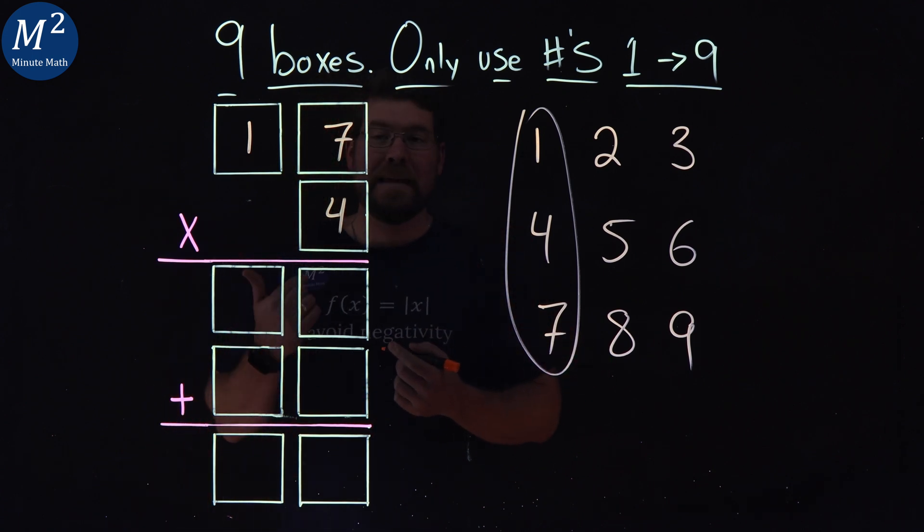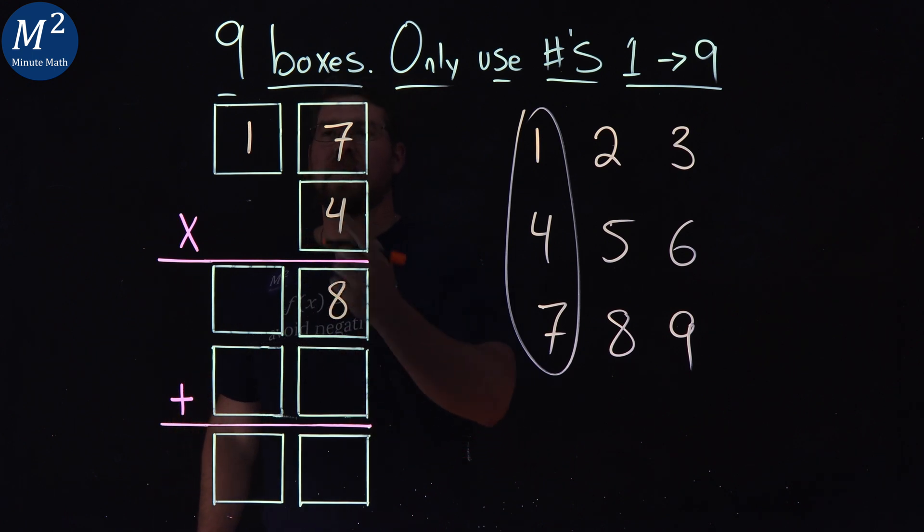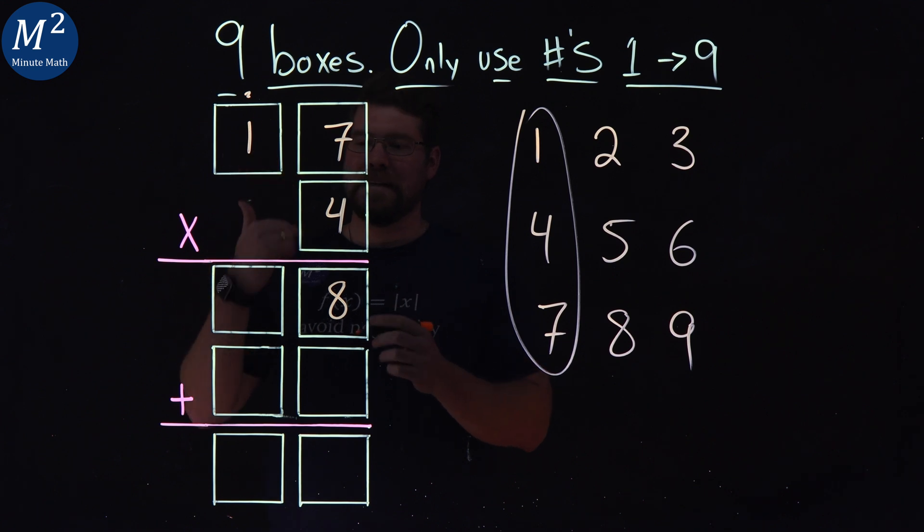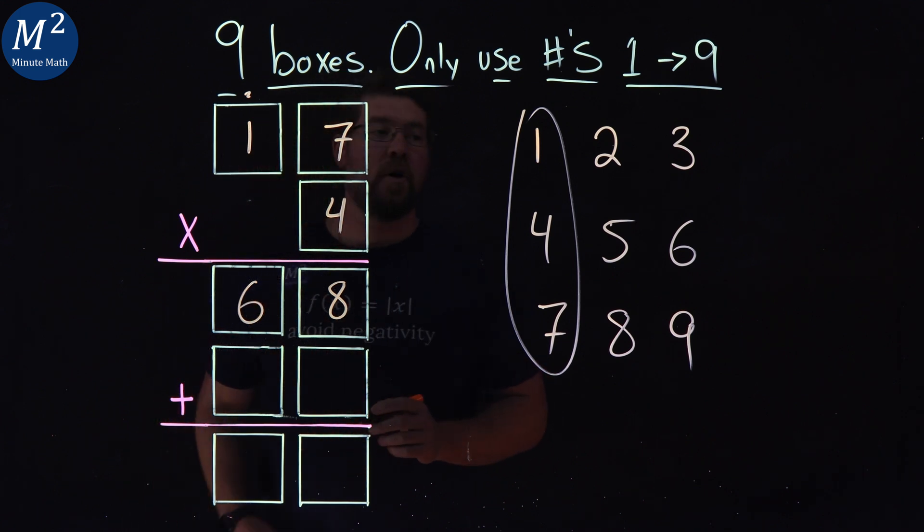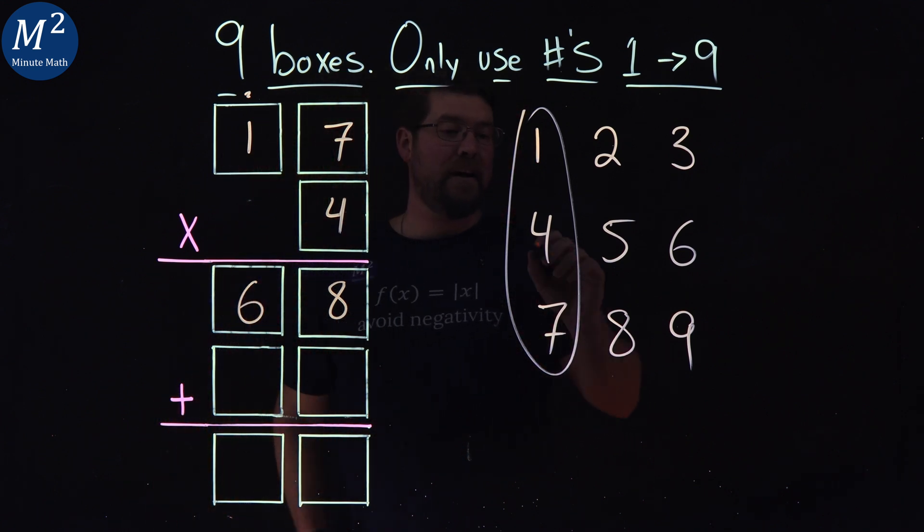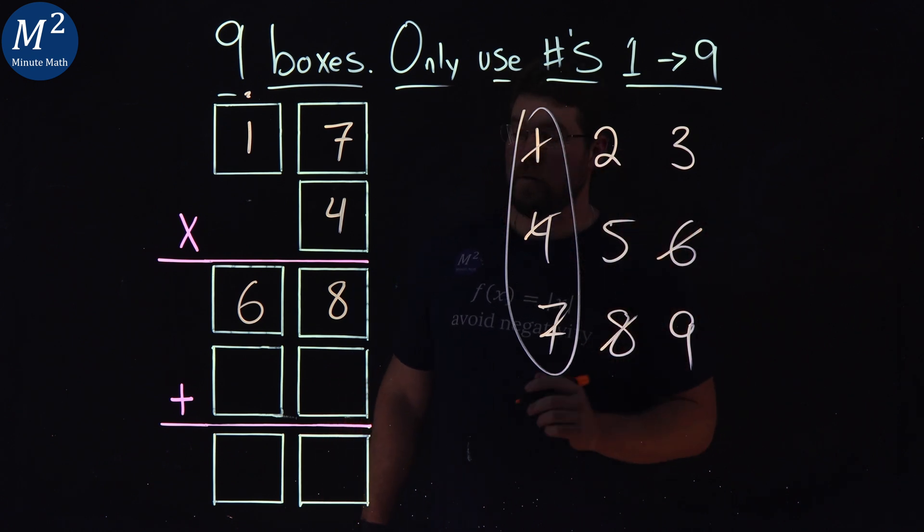Multiply that out. See what we get. Four times seven gives me that 28. Eight here, carry the two up top. Four times one is four plus two is the six. So if we have that, six and eight now are also used.